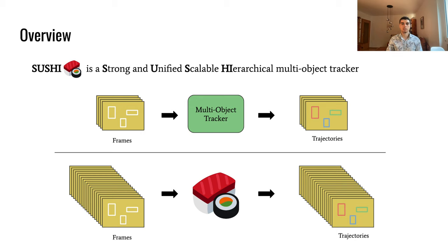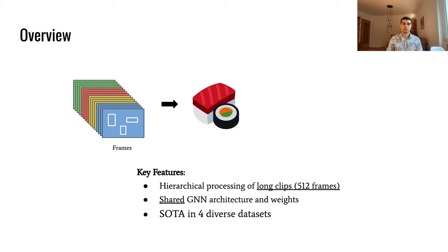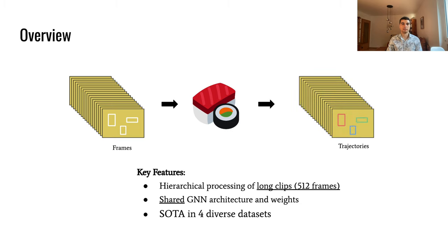Our model SUSHI is a strong multi-object tracker with a unified solution across time spans and good scalability thanks to its hierarchical nature. SUSHI processes a hierarchy of subclips and performs tracking over long video clips by using the same graph neural network architecture and weights over each hierarchy level. Due to its hierarchical nature, SUSHI is highly scalable and enables processing of long clips efficiently. Specifically, our method excels at long-term tracking and can recover identities even after 512 frames. Finally, SUSHI sets new state-of-the-art results by a significant margin in four diverse datasets.